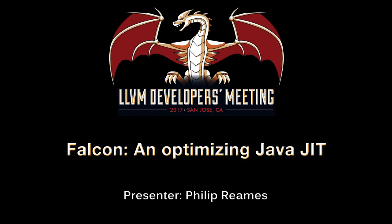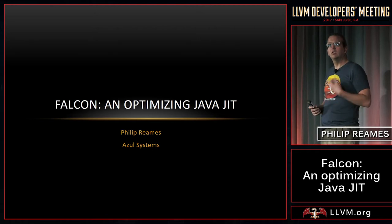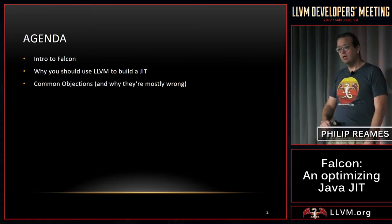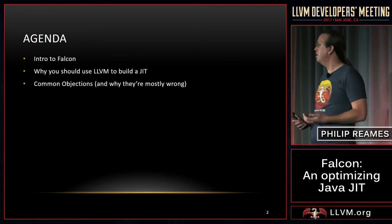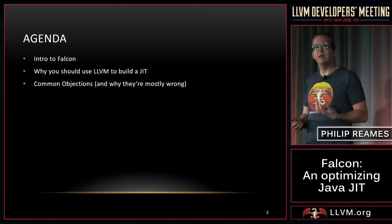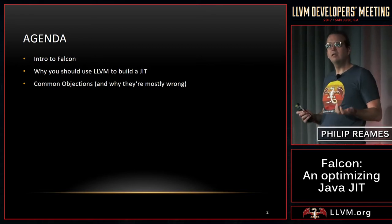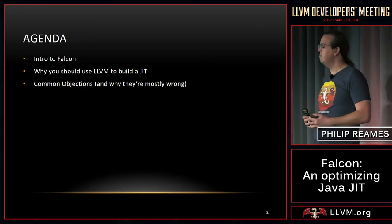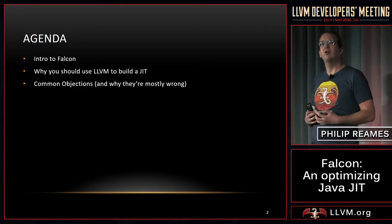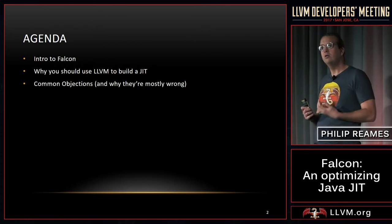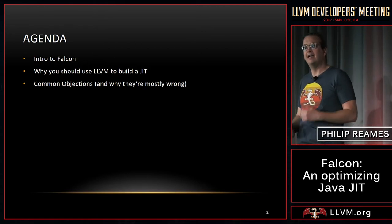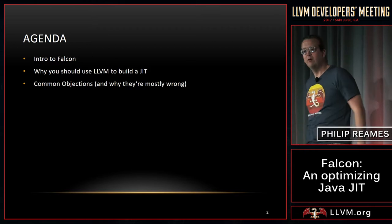Today I'm going to be talking about our experience building and optimizing a JIT for Java that is currently part of the shipping Zing JVM. The rough outline of the talk: I'll give a little background on what Falcon is, the development timeline, the reasons why you should build a JIT, and then the majority of the talk is organized around common objections we hear as to why using LLVM to build a JIT is a bad idea. We go through and evaluate each of them one by one.